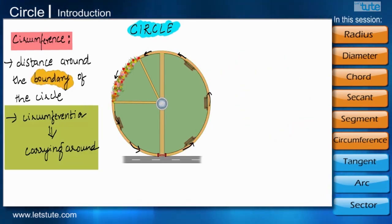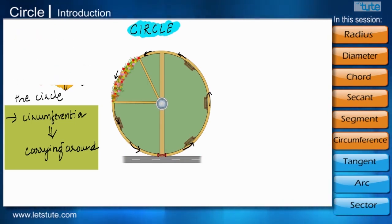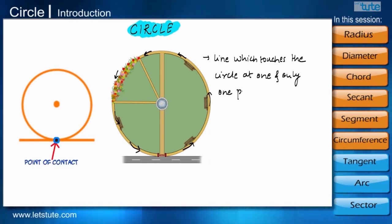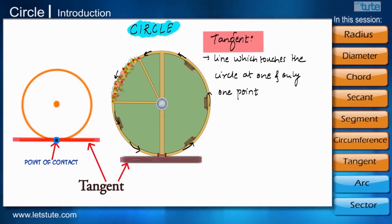If you noticed, the road in front of the park touches the park only at the entrance gate of the park. So, if there is a line which touches the circle at one and only one point, then it will be called as a tangent to the circle.